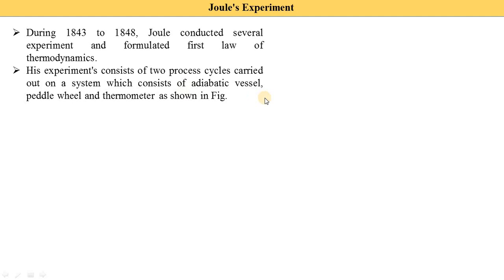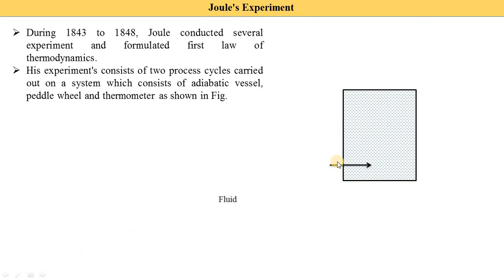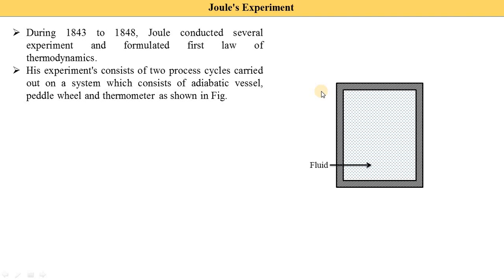Here you see this is one adiabatic vessel in which the fluid is filled. When the word 'adiabatic vessel' is used, we need to draw insulation surrounding the vessel. This insulation indicates that there is no heat transfer from the fluid to the surroundings or from the surroundings to the fluid — meaning Q is equal to zero when any system is insulated.